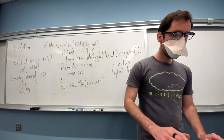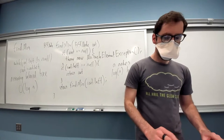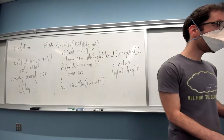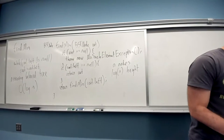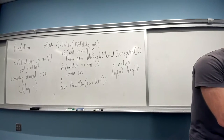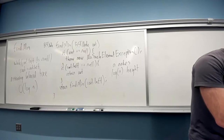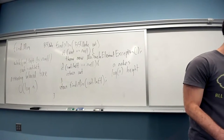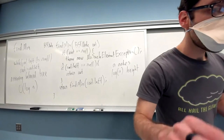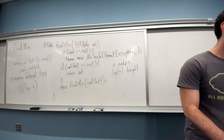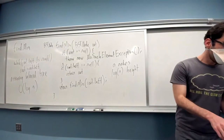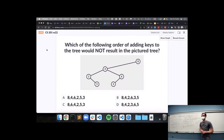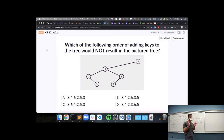My laptop has seen the light — I have internet now, over the moon. Let's do a bit of practice thinking about how nodes get added to a binary search tree. I have one pictured here and four different possible orders in which these keys were inserted.